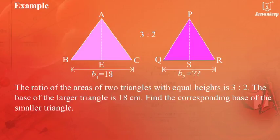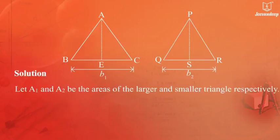Find the corresponding base of the smaller triangle. Let A1 and A2 be the areas of the larger and smaller triangle respectively.